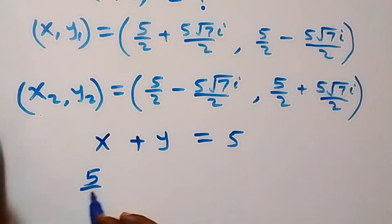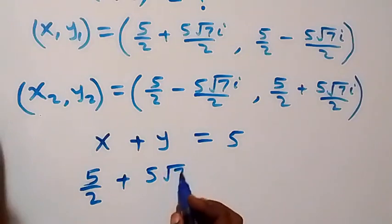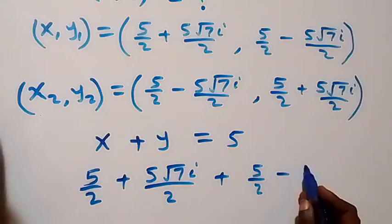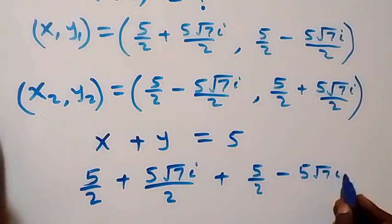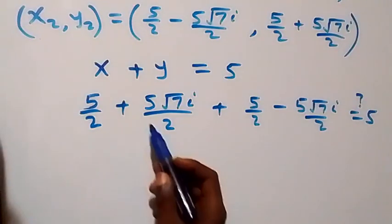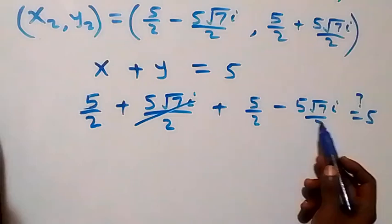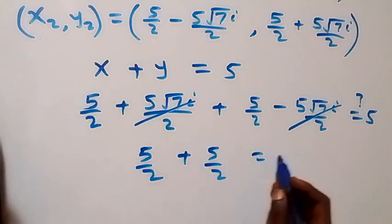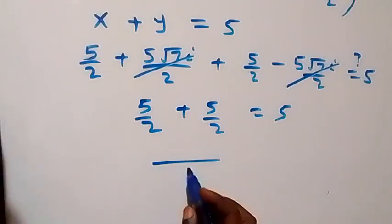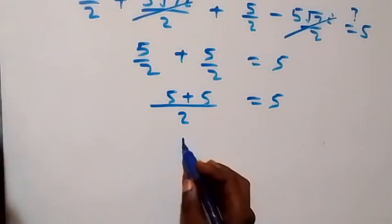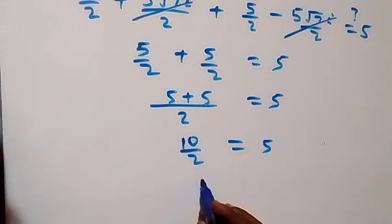Using the first solution: x plus y equals (five over two plus five root seven i over two) plus (five over two minus five root seven i over two). The imaginary terms cancel, leaving five over two plus five over two, which equals ten over two, and that equals five. So the left-hand side equals the right-hand side — equation one is satisfied.